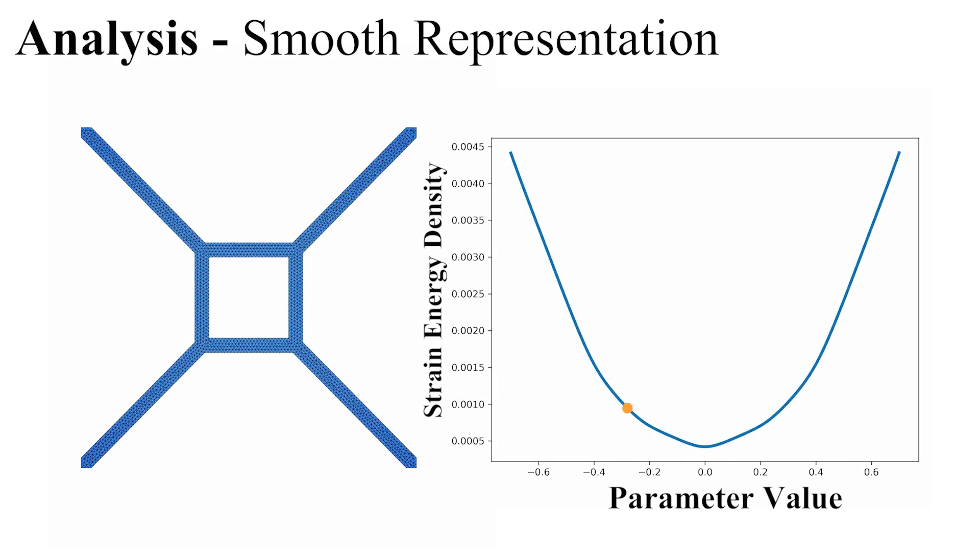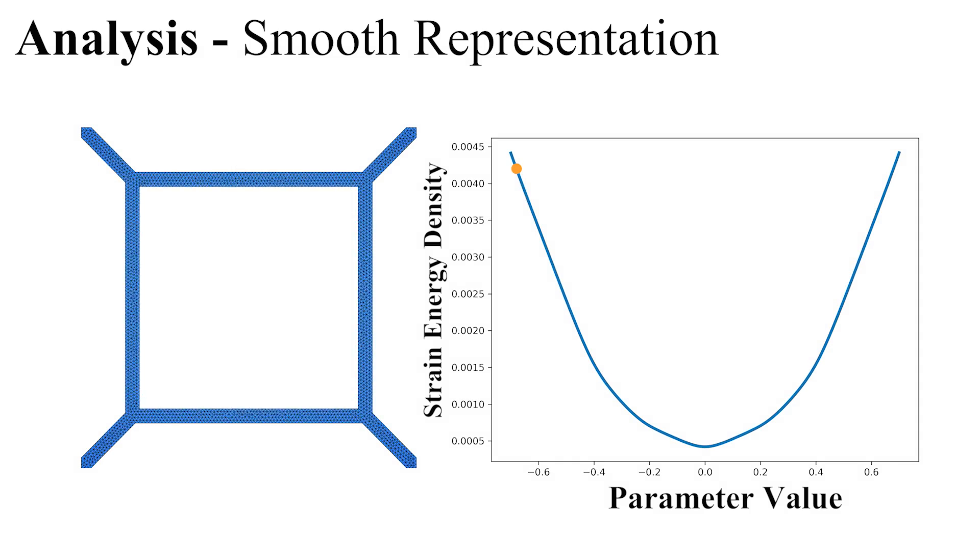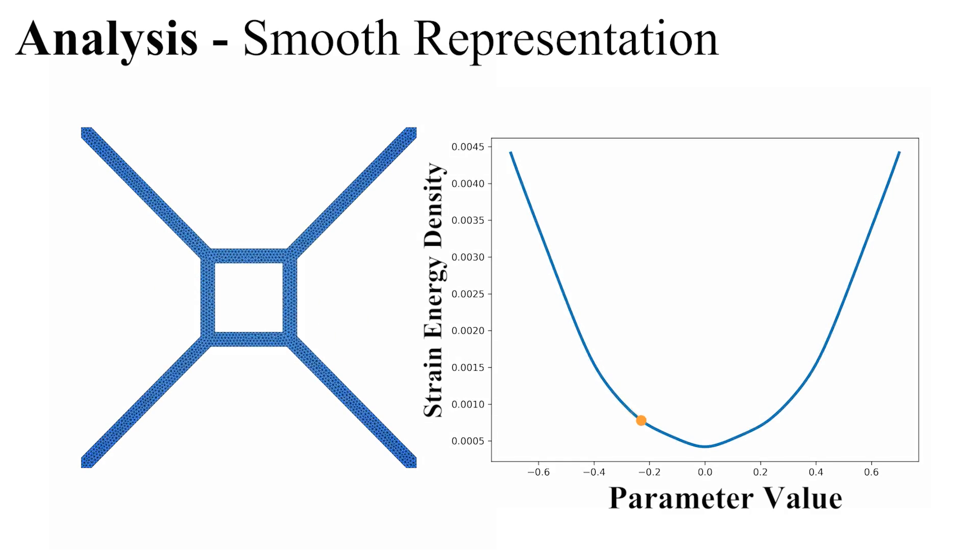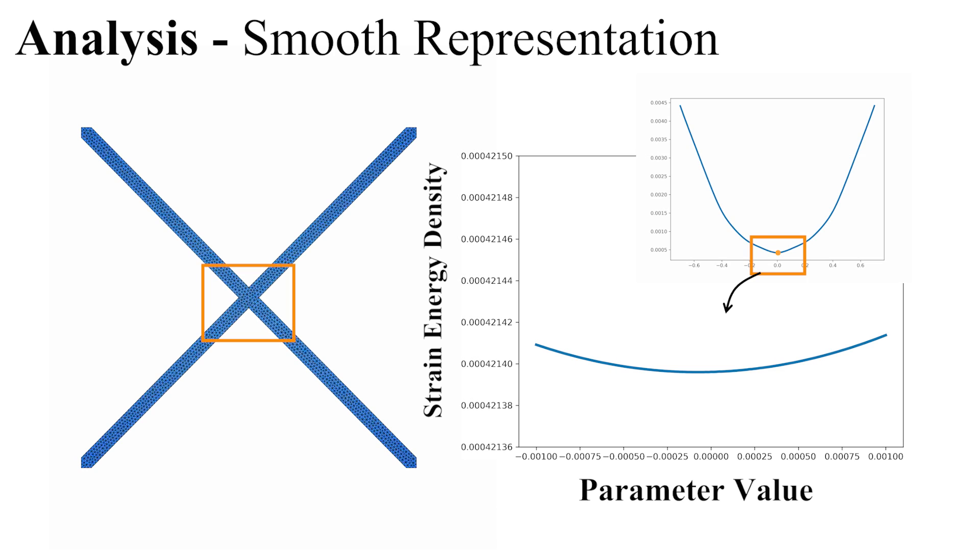We examine this metamaterial unit where a single parameter controls the size of the inner square. Our neural metamaterial network provides a smooth representation even at the singularity point.